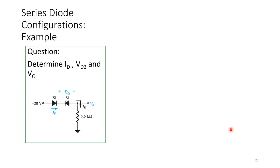Next example: what happens when two silicon diodes face each other — one forward biased and one reverse biased?